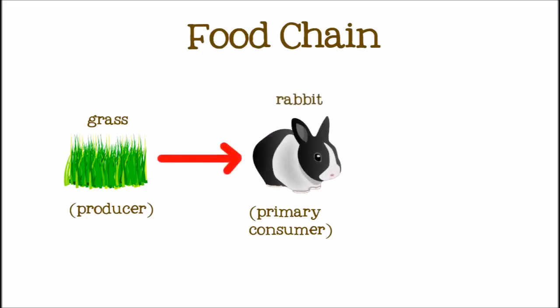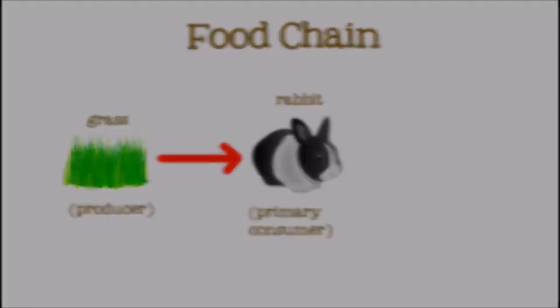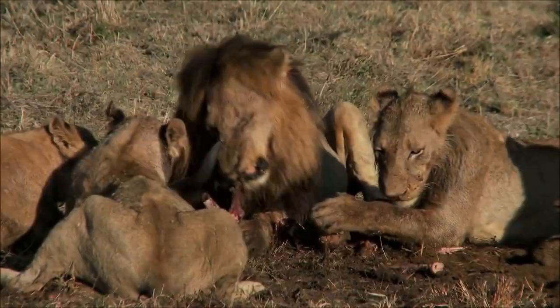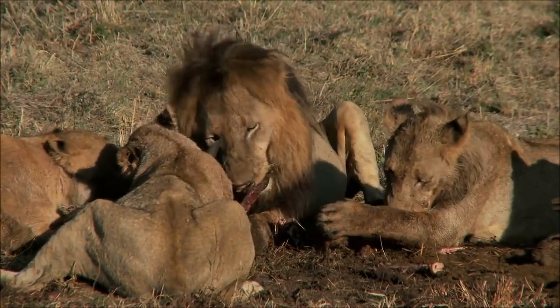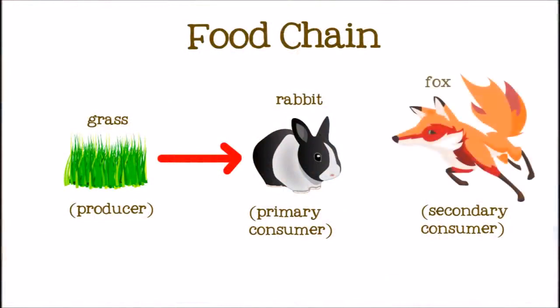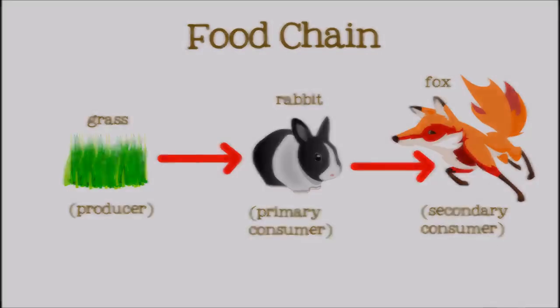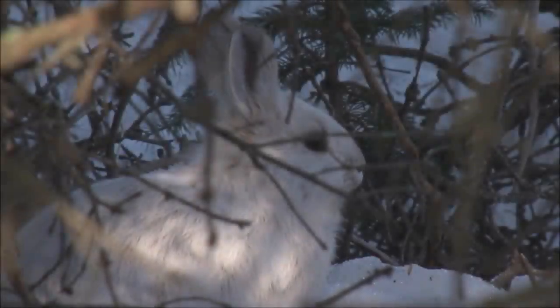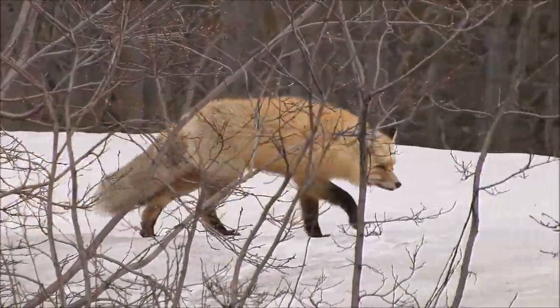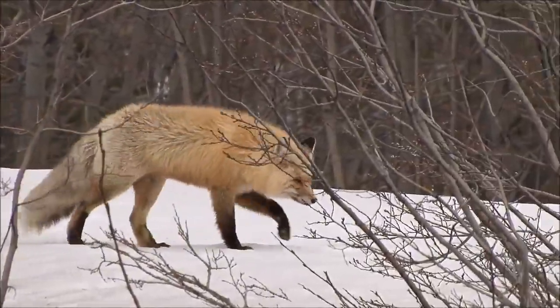Let's add a rabbit to our food chain. Next comes a secondary consumer — the second consumer in the food chain. This consumer is a carnivore and gets their energy by eating other animals. Maybe our rabbit will get eaten by a fox. When the fox eats the rabbit, part of the energy that the rabbit got from the grass is transferred to the fox. So the rabbit eats the grass, then the fox eats the rabbit — the energy from the sun is captured by the grass, transferred to the rabbit, and then transferred to the fox.